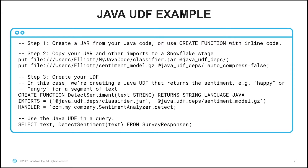In this case, we're creating a Java UDF that returns the sentiment — such as happy or angry — for a segment of text. The first thing we'll do is specify CREATE FUNCTION, then the function name itself. In this case, we've called it detect_sentiment. The input we're passing in is text, which is a string, and we're returning a string as output. Note that here we specified LANGUAGE JAVA to indicate that we want to use Java for our UDF.